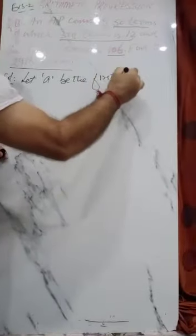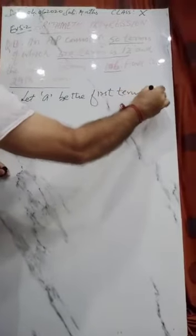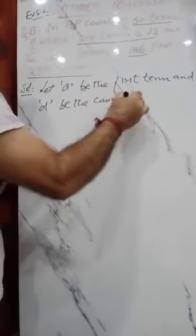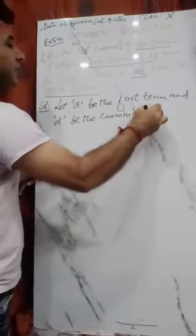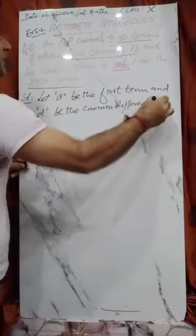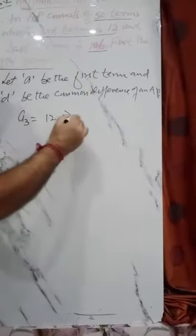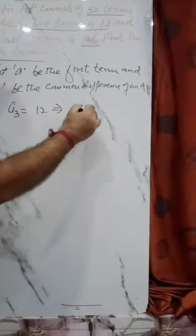Let 'a' be the first term and d be the common difference of an AP. Given here, the third term a₃ = 12, so a + 2d = 12.